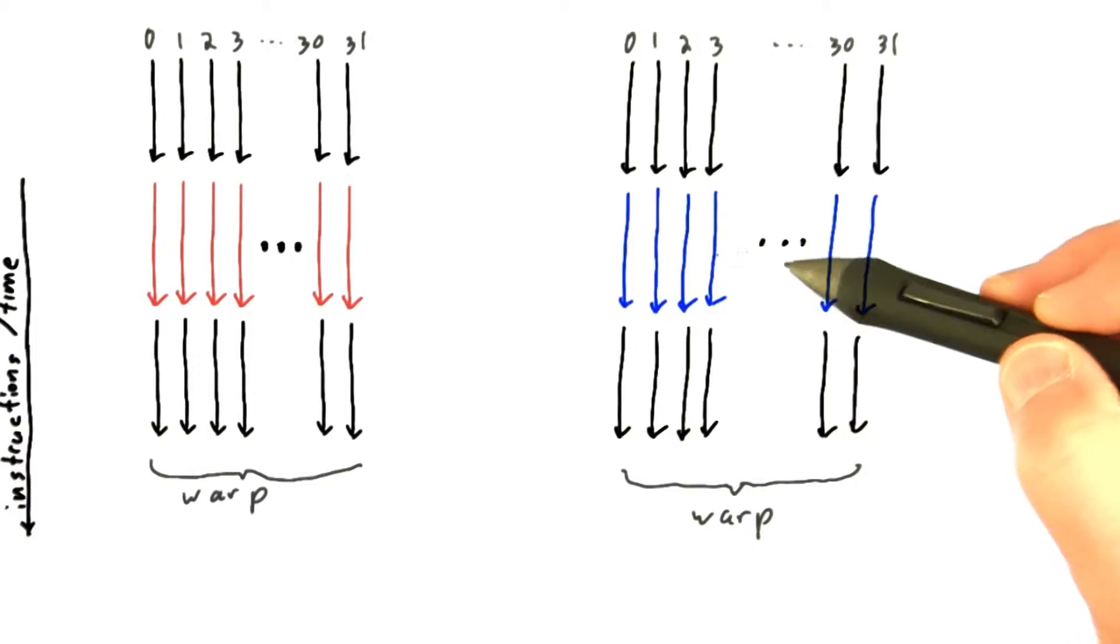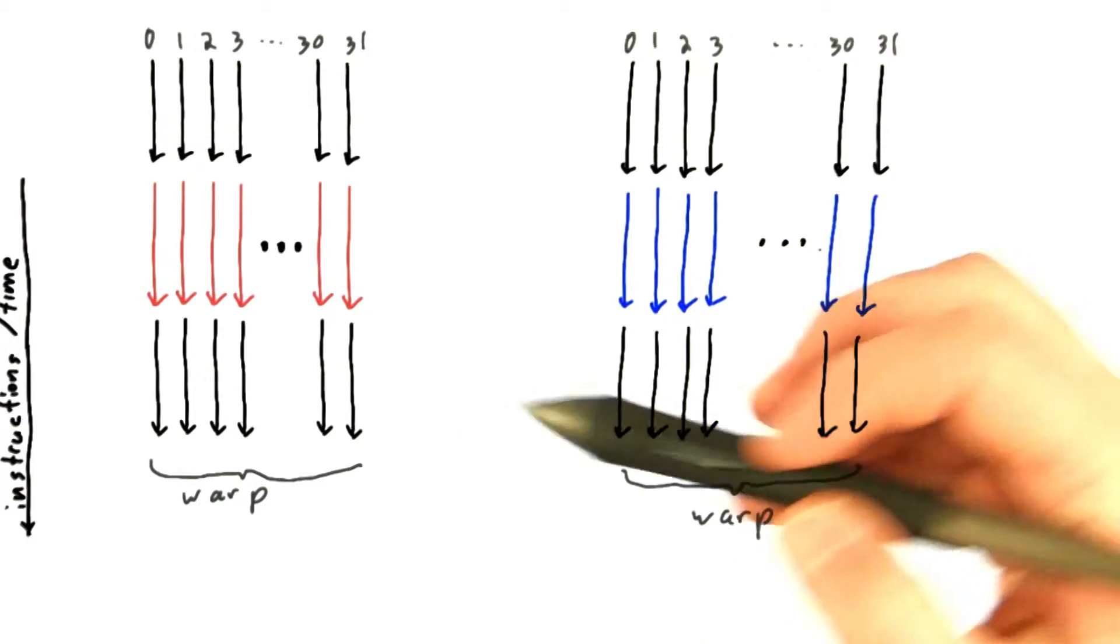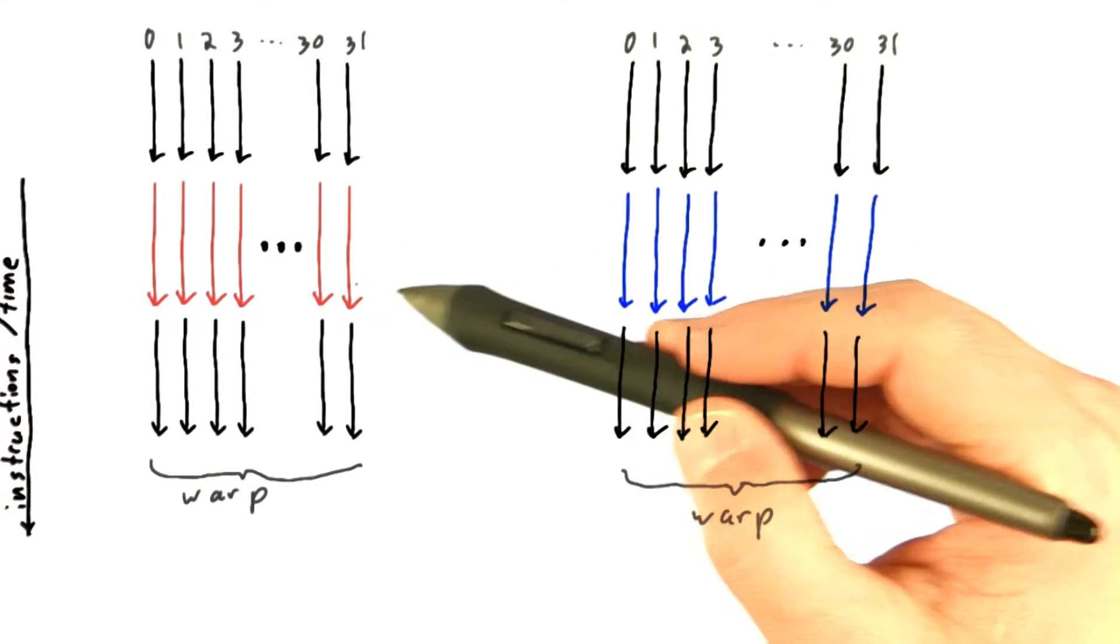Here's another warp where all the threads take the else clause. So there's no problems with this. All of these threads execute all of their instructions in lockstep.